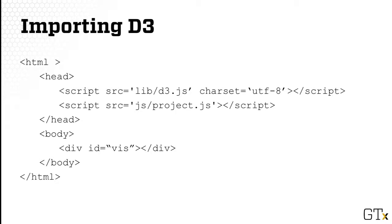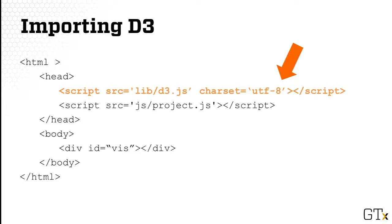When creating a D3 visualization, the very first thing you need to do is import the D3 library. You do that in the header section using the script command. You might notice that not only are we loading the JavaScript file, we're also specifying the character set — here we use UTF-8, meaning Unicode. The reason is that in the D3 JavaScript source code there are some Unicode characters such as pi. So it's incredibly important: if you do not set UTF-8, there will be errors.